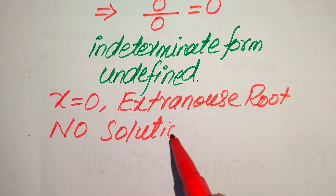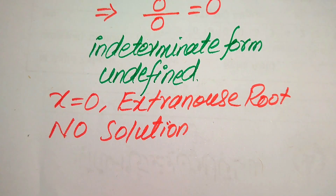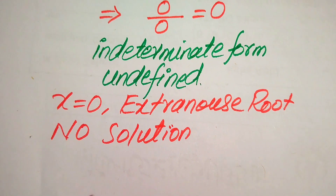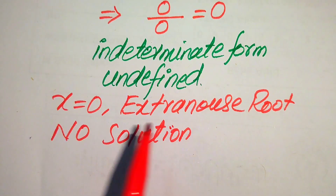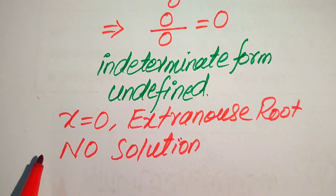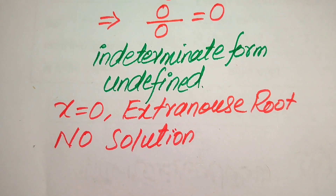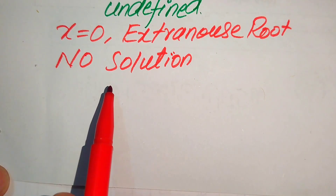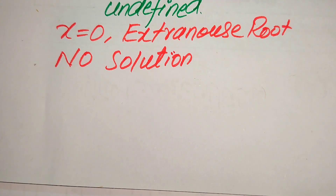To explain the term extraneous root: roots which satisfy our given question statement are called the solution of the given equation, and roots which do not satisfy our given question statement are called extraneous roots. Here in this question we have only one root of the given equation, and it does not satisfy the question statement, so this root is the extraneous root. Our final conclusion is that this question has no solution.